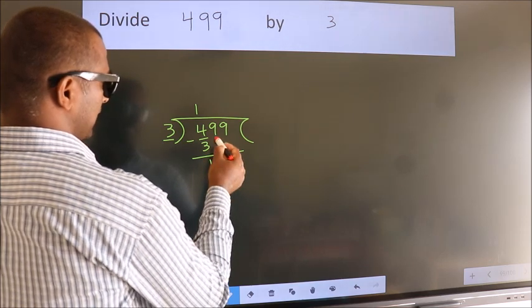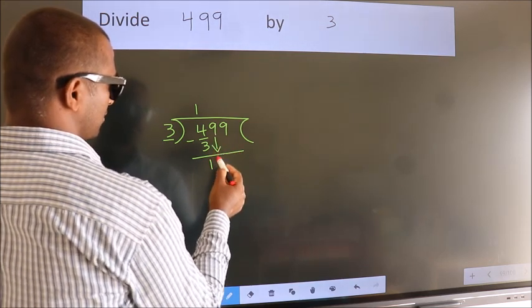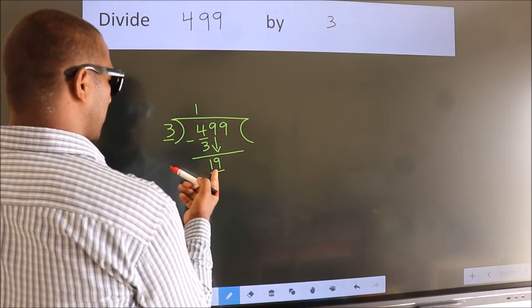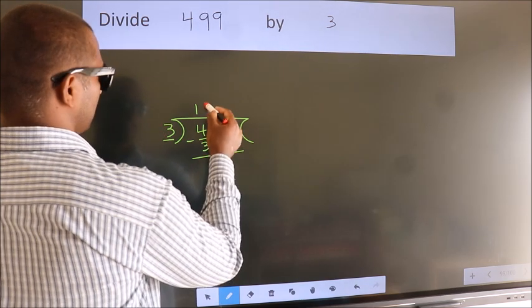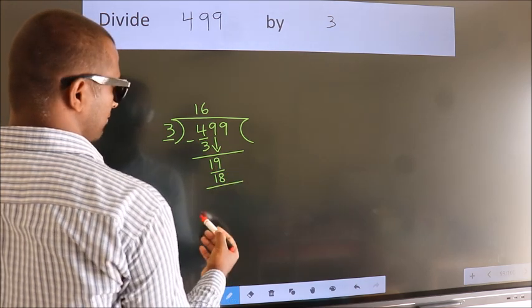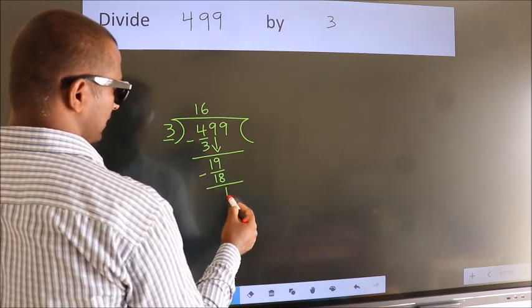After this, bring down the beside number. So 9 down. So 19. A number close to 19 in the 3 table is 18—3 times 6, 18. Now we subtract. We get 1.